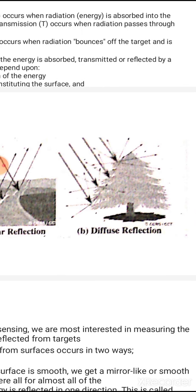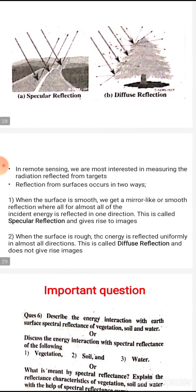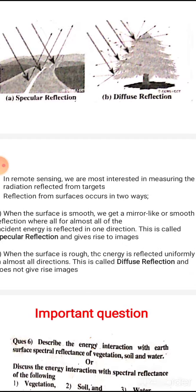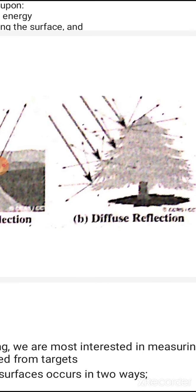When the surface is rough, the energy is reflected uniformly in almost all directions — this is called diffuse reflection, and it does not give rise to images. For example, when electromagnetic energy strikes a tree, the rough surface directs the energy in various directions. This is diffuse reflection and never gives rise to remote sensing images.